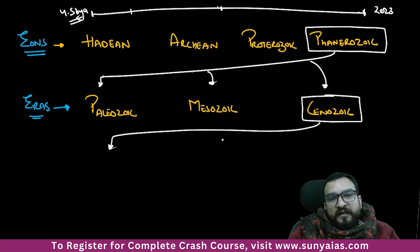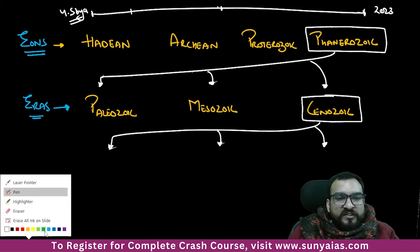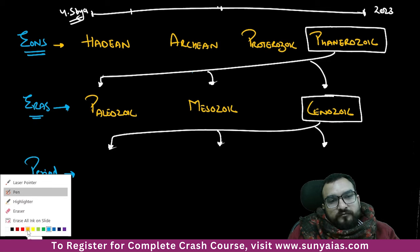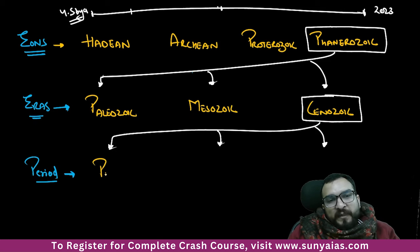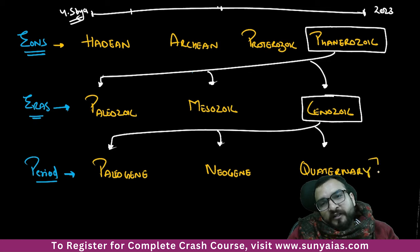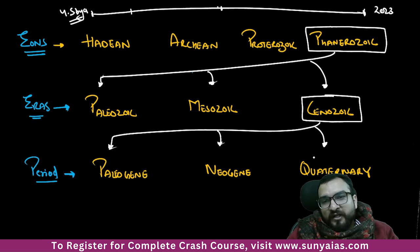The Cenozoic era is divided into three periods: Paleogene, Neogene, and Quaternary. You must all agree that this Quaternary period is written in our books — history begins from here. This is the Quaternary period.